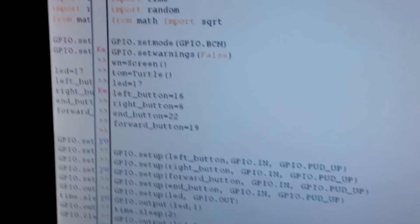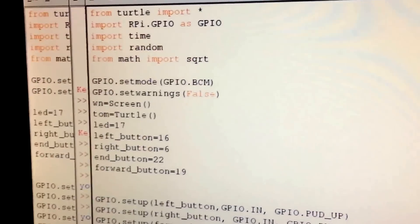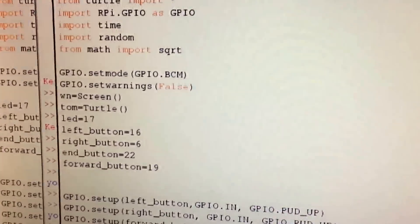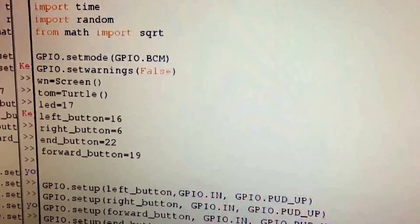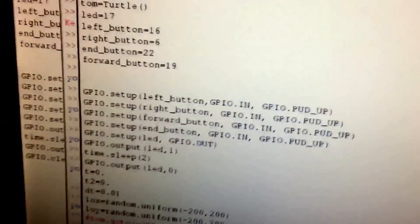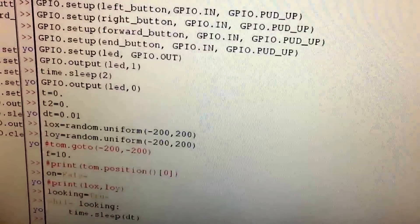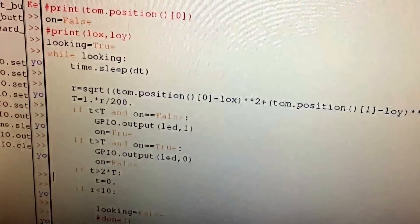So in the program here I import TURTLE and then this is stuff you need just to get input from the board. So I set the inputs, I set the LED, I set the buttons and all that stuff, nothing really fancy there.